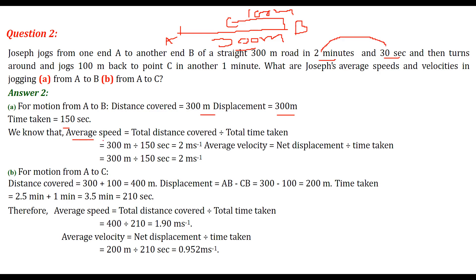Since the distance covered and displacement are both the same, the average speed and average velocity will also be the same. Average speed equals total distance divided by total time, and average velocity equals net displacement divided by time. Both give 300 divided by 150, which equals 2 meters per second.